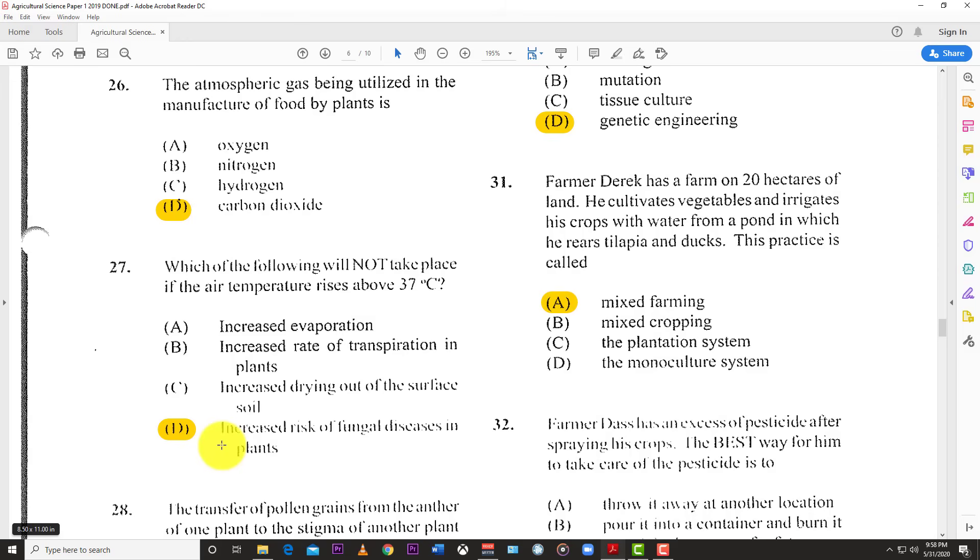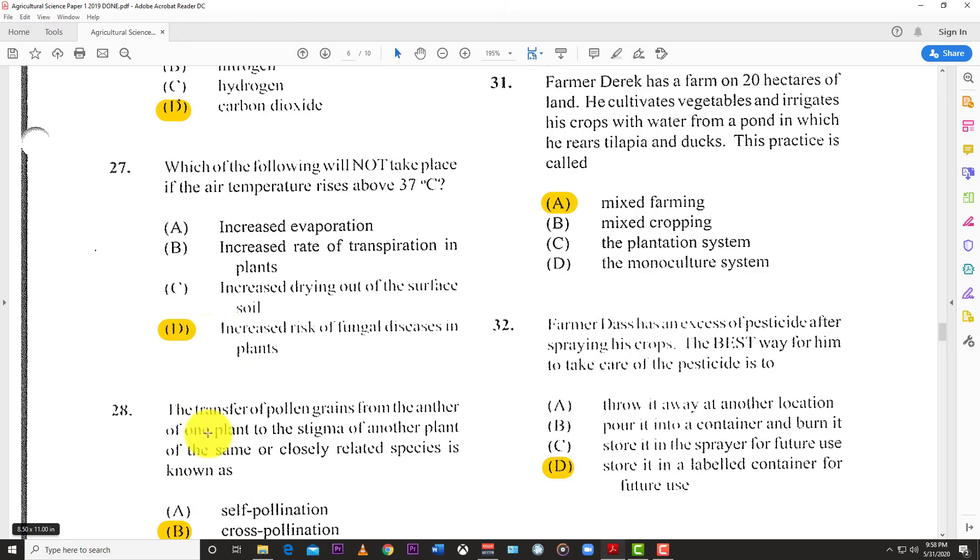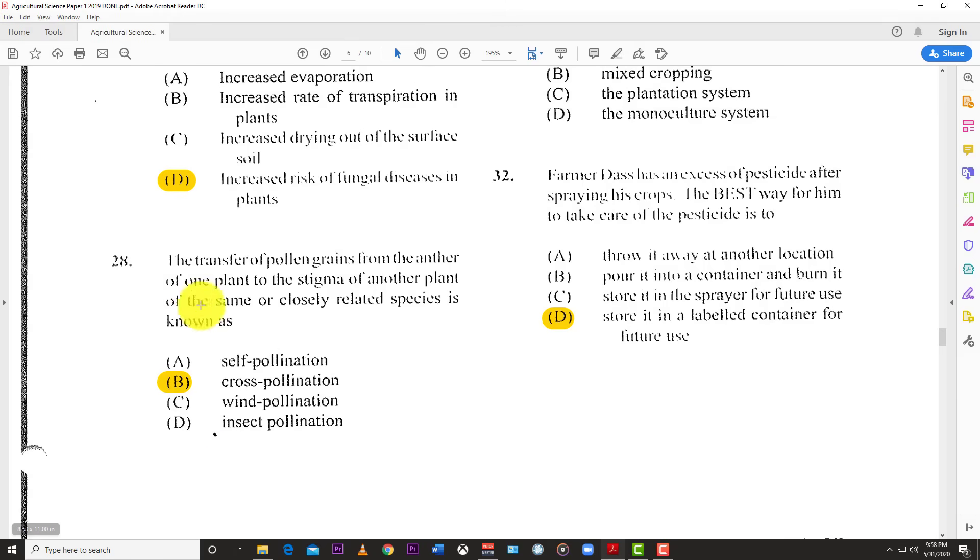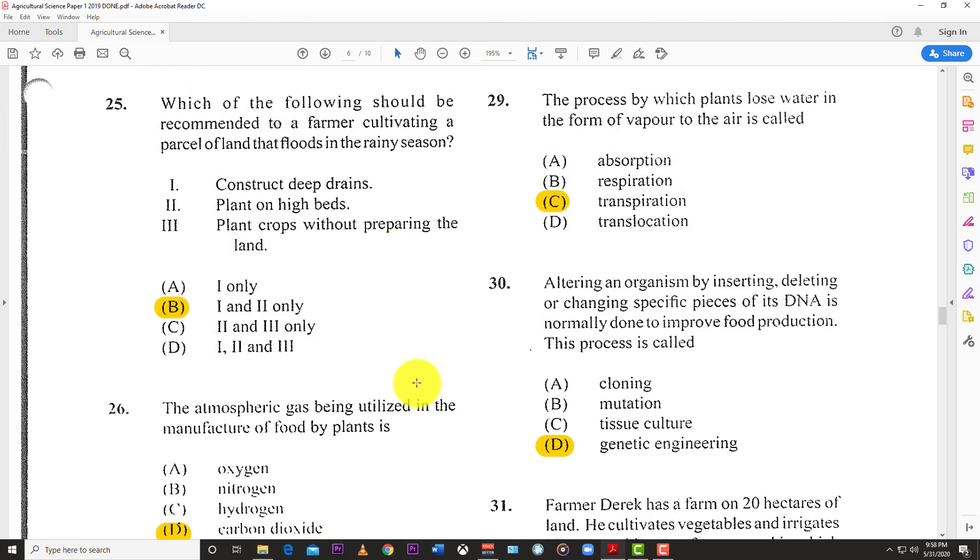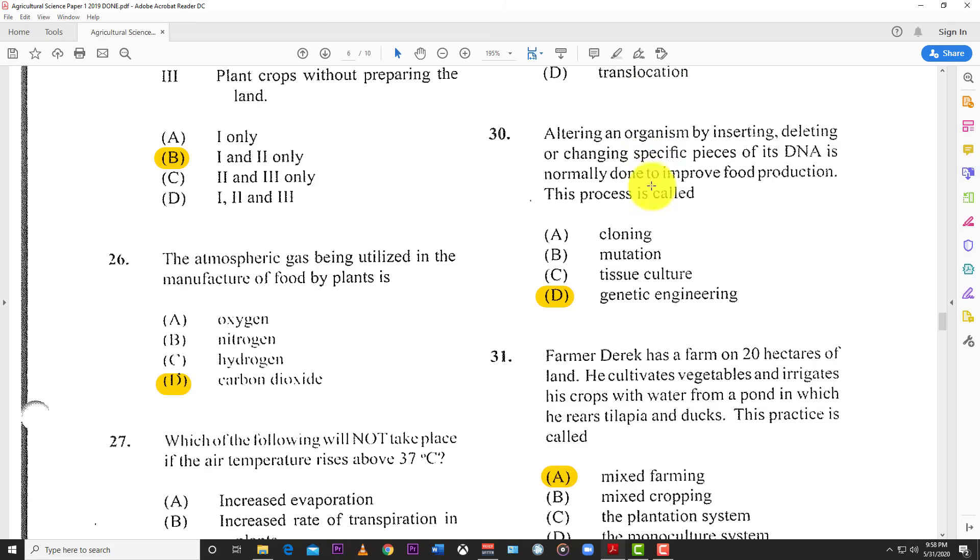Number 28: The transfer of pollen grains from the anther of one plant to the stigma of another plant of the same or closely related species is known as cross-pollination. Number 29: The process by which plants lose water in the form of vapor to the air is called transpiration.